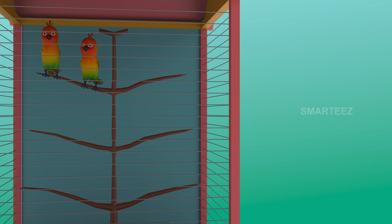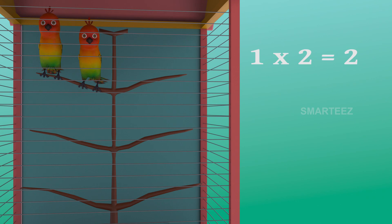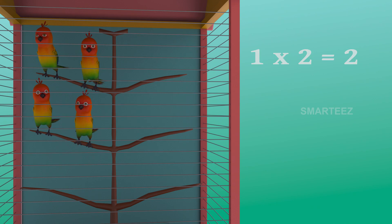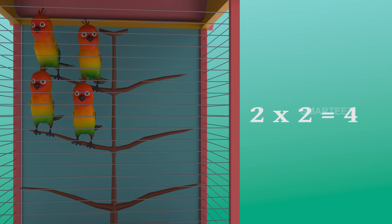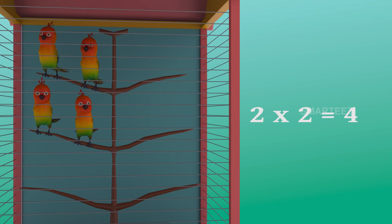Okay, I'll make it simpler. The parakeets are settling in the cage as sets of two. The first set had two parakeets. And when the second set of two parakeets was added to the first set, it became four.